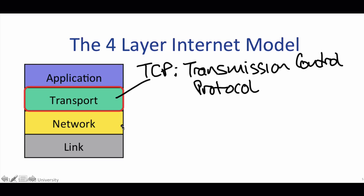The network layer is providing an unreliable datagram delivery service underneath. Applications such as a web client or an email client find TCP very useful indeed. By employing TCP to make sure data is delivered correctly, they don't have to worry about implementing all of the mechanisms inside the application. They can take advantage of the huge effort that other developers have put into correctly implementing TCP over the years, and then reuse it to deliver the data correctly. Reuse is a big advantage of layering.